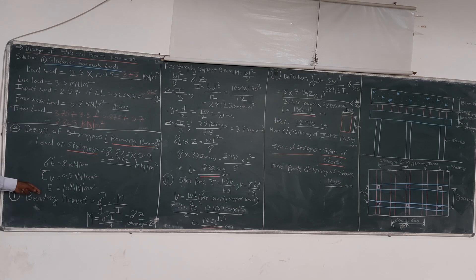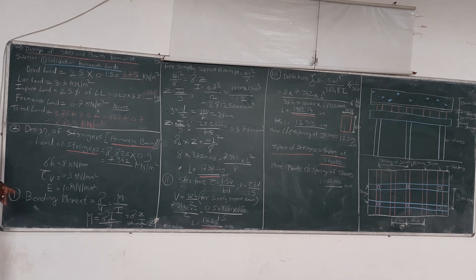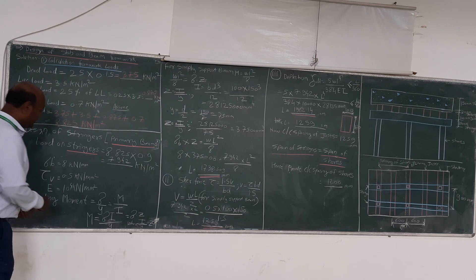Now all these things—sigma, rho, and E—are given already in the question. Now we start by using these three formulas where we will find out the length or the spacing of the shores. First of all, we will use the bending moment formula, that is sigma y is equal to M divided by Z.